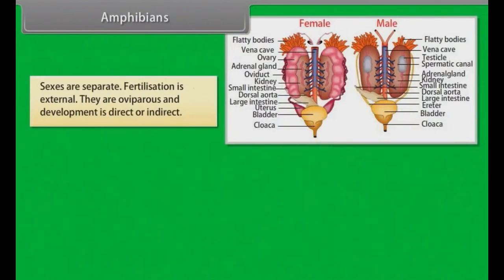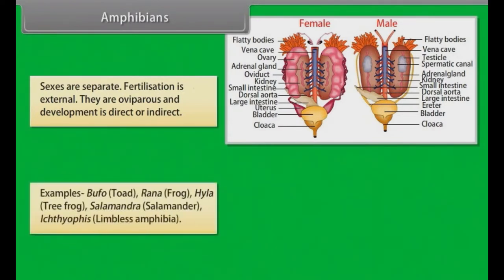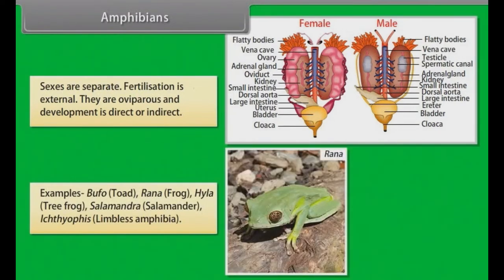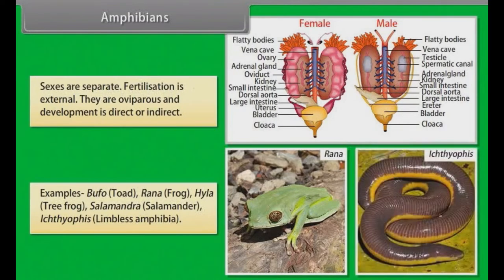The heart is three-chambered — two auricles and one ventricle. Sexes are separate. Fertilization is external. They are oviparous and development is direct or indirect. Examples: Bufo (Toad), Rana (Frog), Hyla (Tree Frog), Salamandra (Salamander), Ichthyophis (Limbless Amphibia).